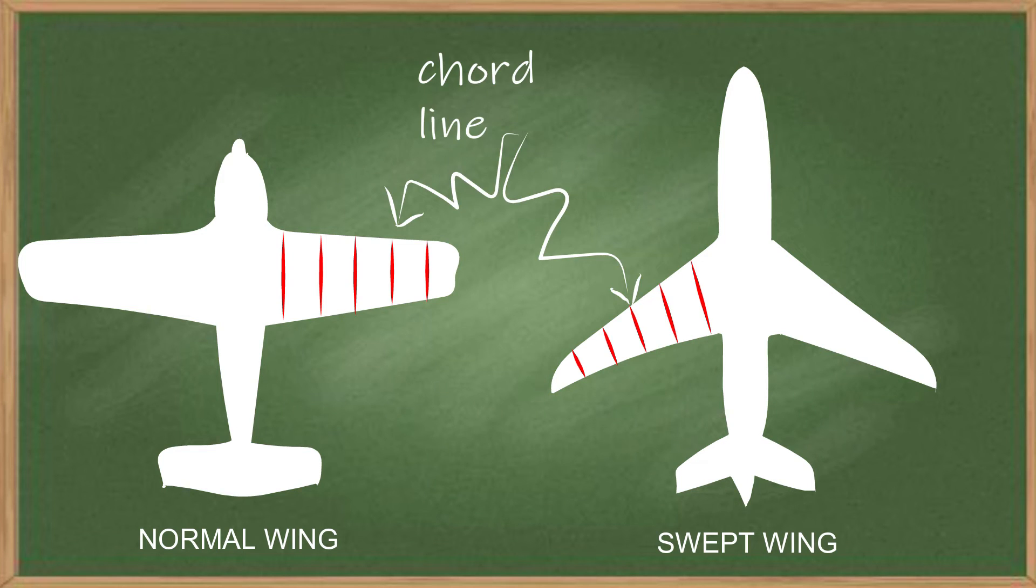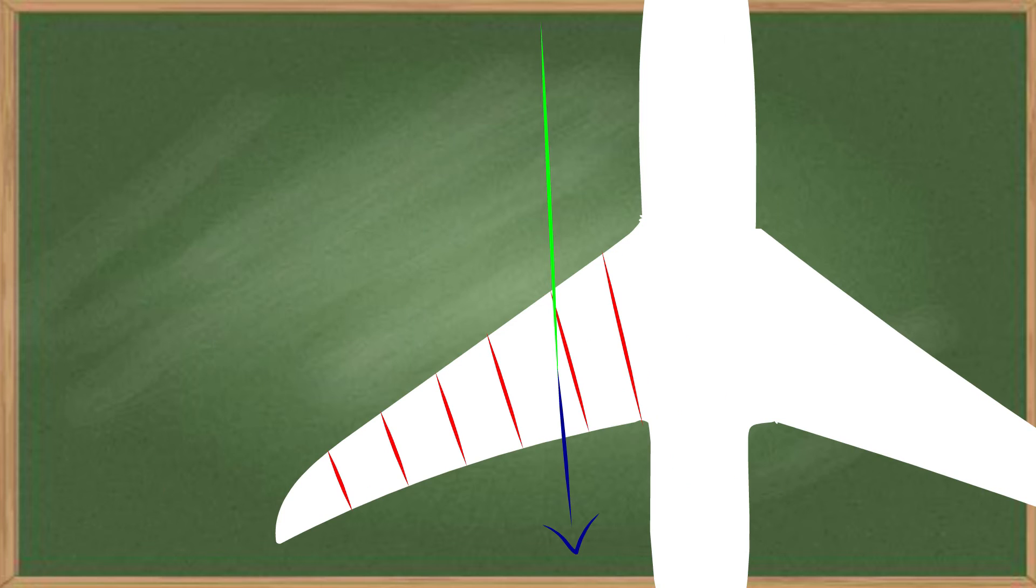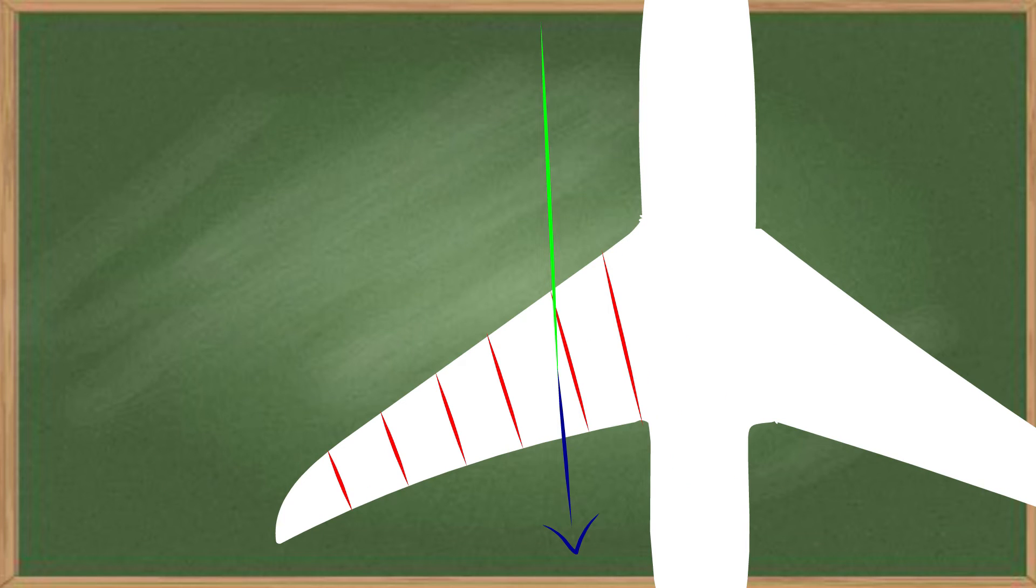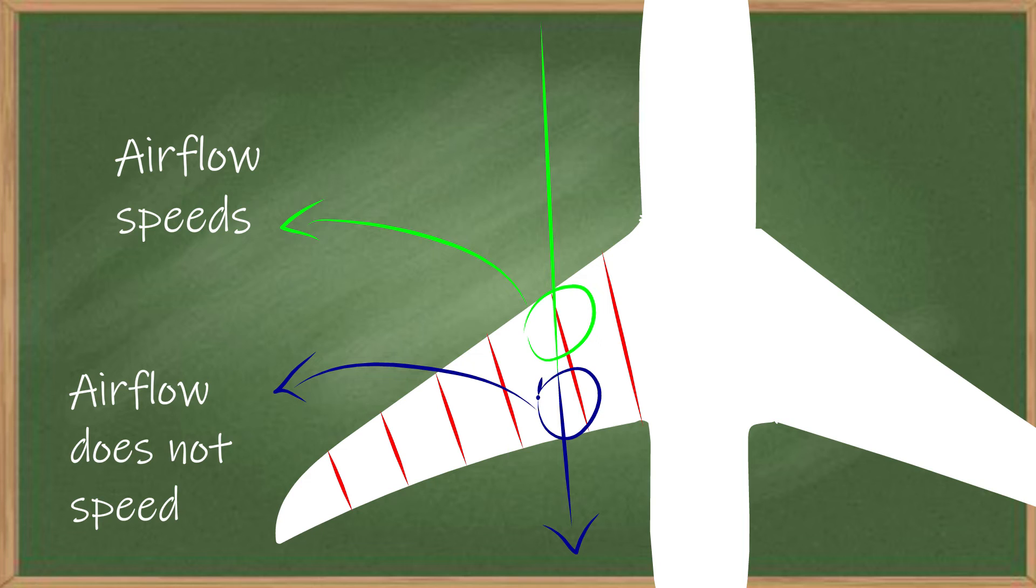It means that because the wing is swept back, part of the airflow over the wing will be parallel to the cord line and this part will speed up. But the other part will be perpendicular to the cord line and this part will not speed up.